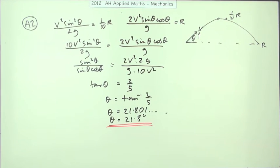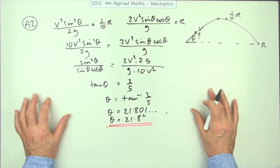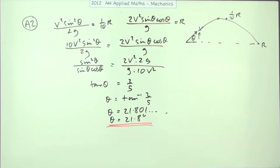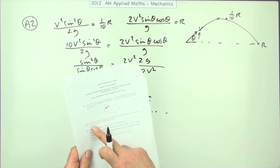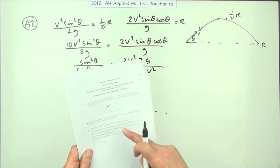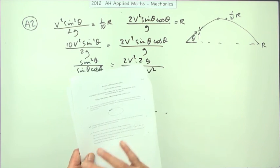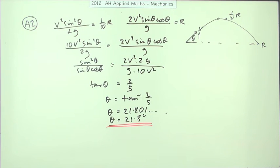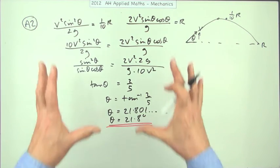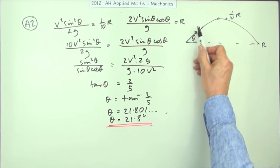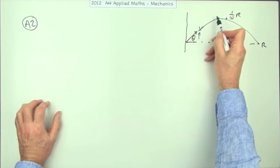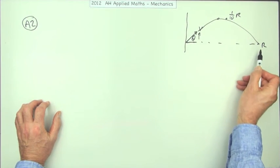That was quite a lot of working for five marks. The question only said: the greatest height reached is one-tenth of the range, calculate the angle of projection. It didn't mention any specific technique, and it is applied maths rather than a physics exam. It strikes me there may have been a simpler way. So what about an alternative? We know this is a parabola — let's just get the equation of the parabola.